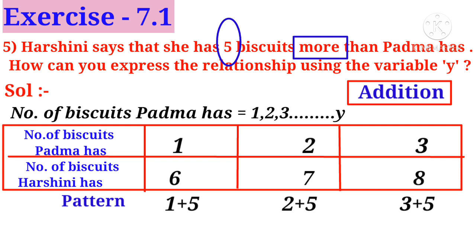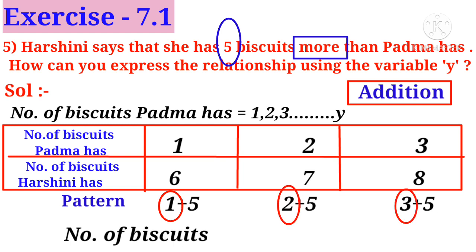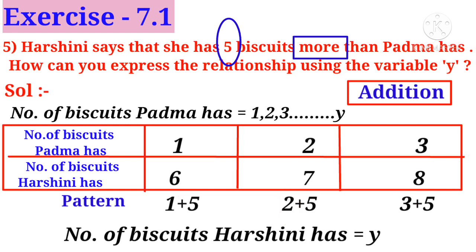Observe the pattern: the numbers 1, 2, 3 are changing. So the number of biscuits Padma has can be replaced by the letter y. Plus five is constant, so it is added. Therefore, the number of biscuits Hashni has equals y plus 5.